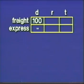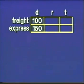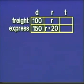We have two vehicles: a freight train and an express train. In the problem, we were given the distances directly. The freight train went 100 miles, the express 150 miles. Now, for the rates, it just told us that the express goes 20 miles per hour faster than the freight. So if we let R stand for the rate of the freight, then R plus 20 stands for the rate of the express train.